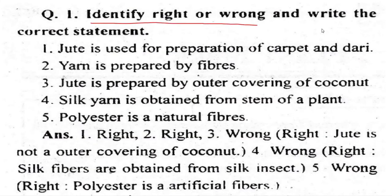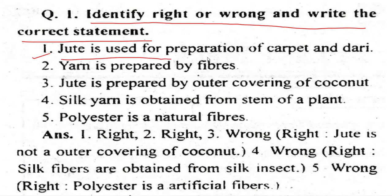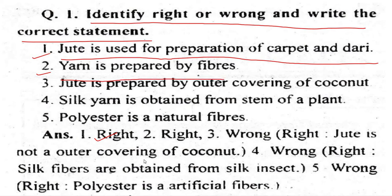Identify right or wrong and write the correct answer. Statement 1: Jute is useful for making carpet and dari - this is right. Statement 2: Yarn is prepared from fiber - this is also right.